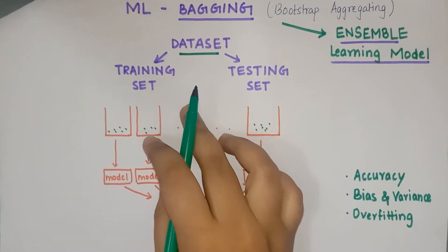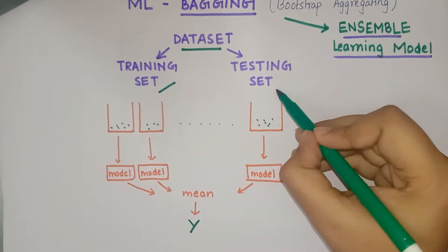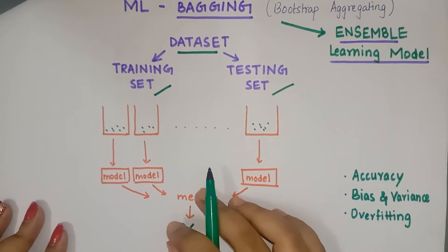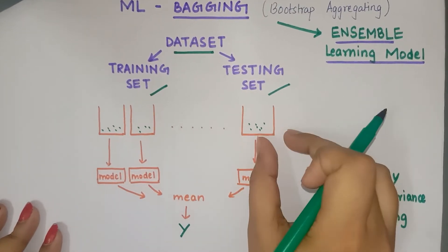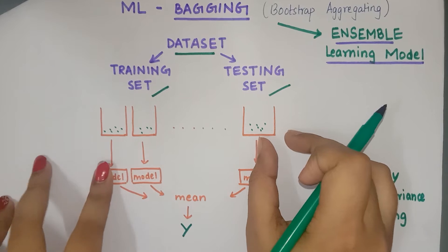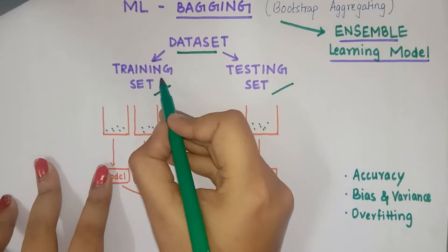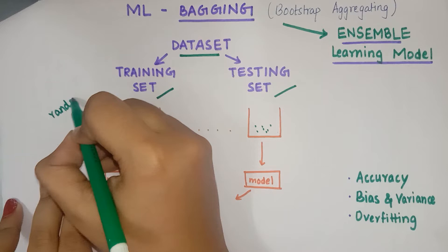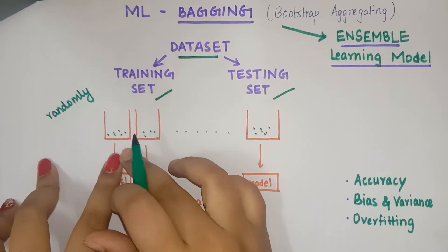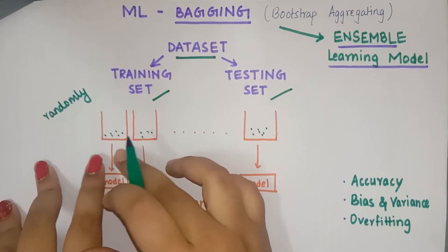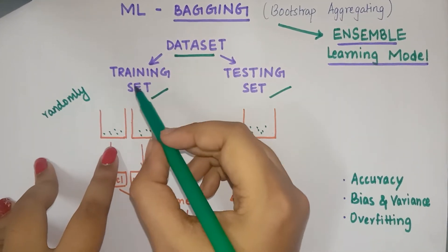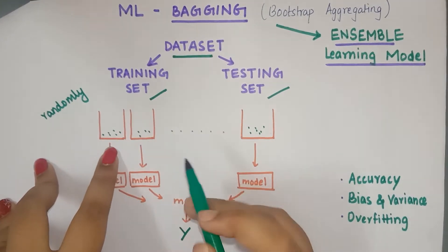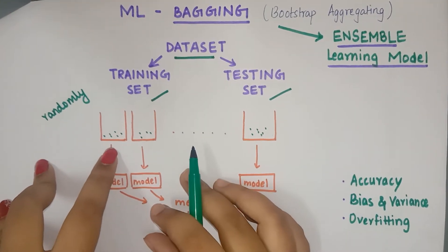In ML, every algorithm contains a training set and a testing set. In bagging, we create various different bags — each bag contains some amount of training data selected randomly, and samples can be repeated. For example, bag one can contain one of the training samples twice or many times as required.